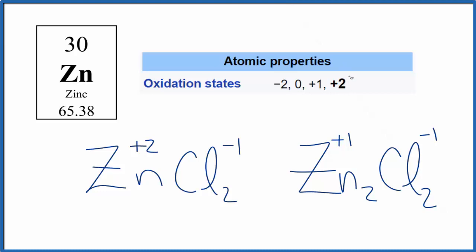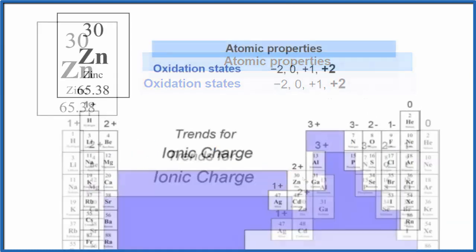So although zinc normally has a plus two oxidation state, it can also be plus one. Note that oxidation state is different than ionic charge, although there is overlap. If we look at ionic charge for zinc, we see that when zinc forms ions it'll be two plus.